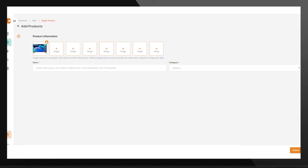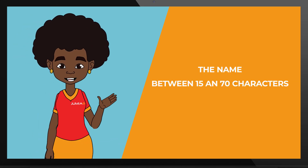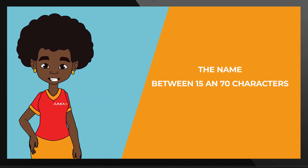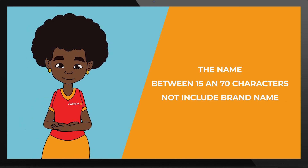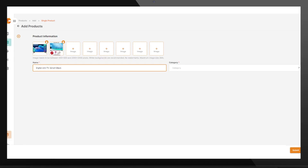Add the name of the product. The name should be between 15 and 70 characters for a better content score and should not include the brand name. For example, a digital slim television, 32-inch black.